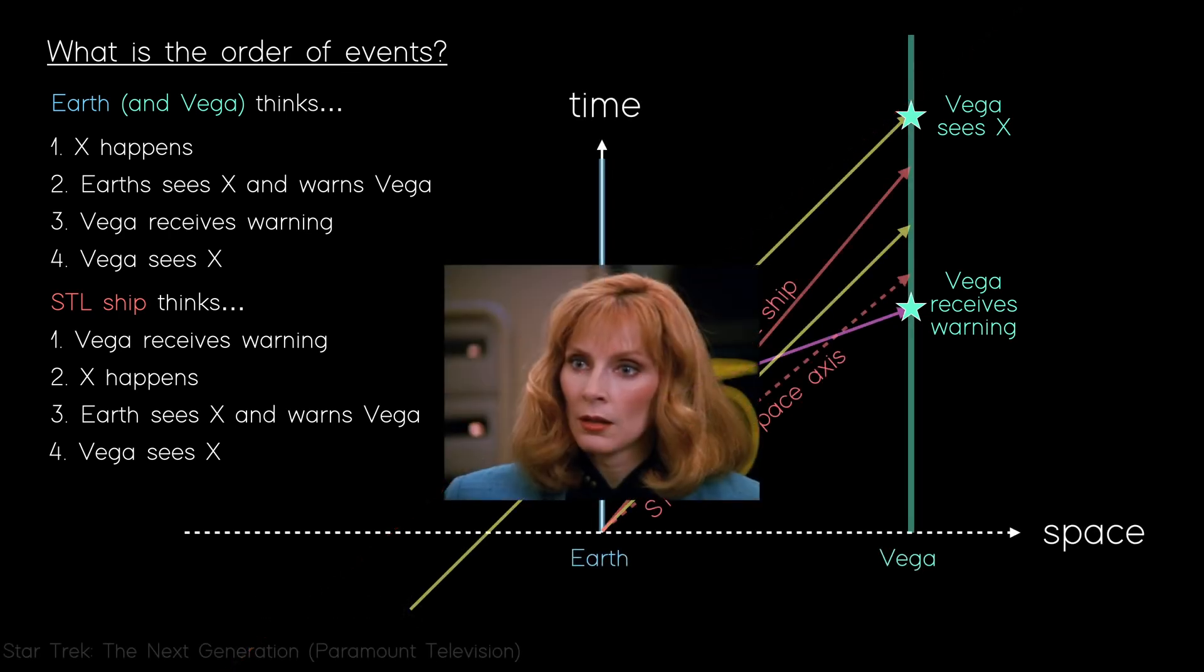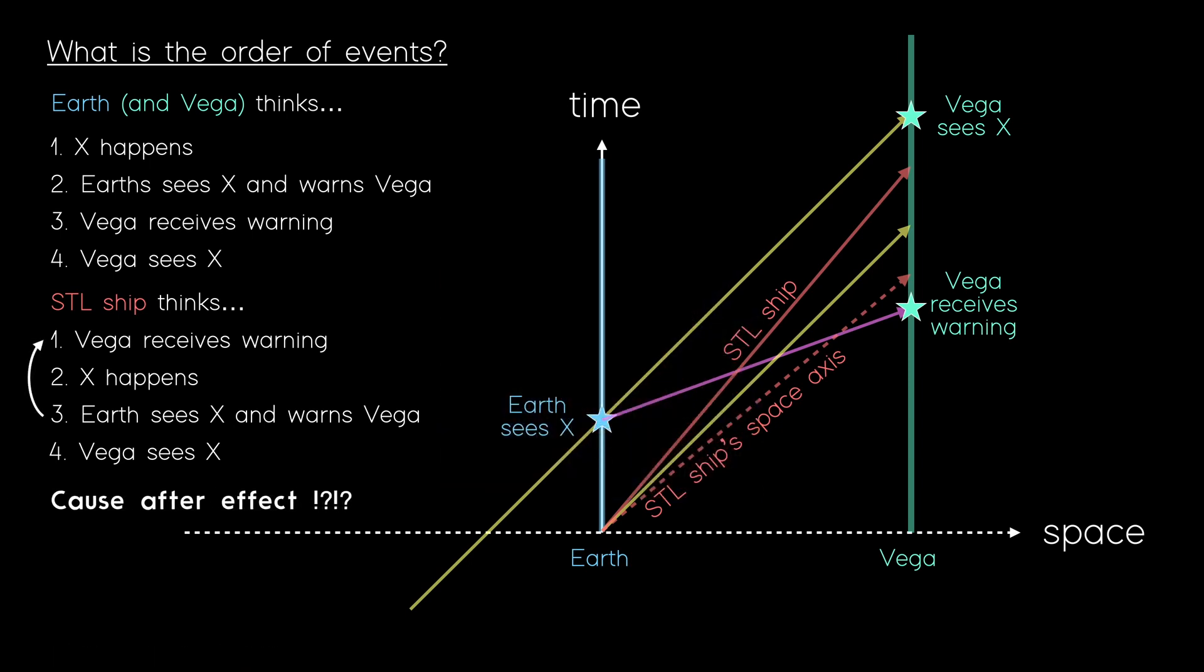Looking at this order, we can immediately see something very strange. Vega received the warning message about X before Earth even sent it. How is that possible? Cause transpired after the effect. Causality is broken.